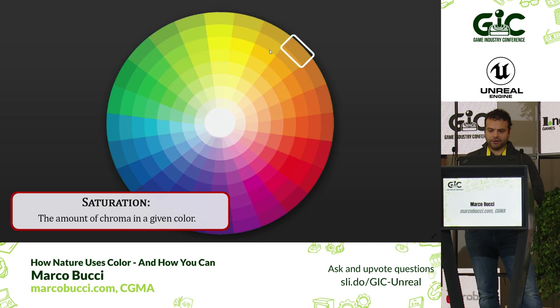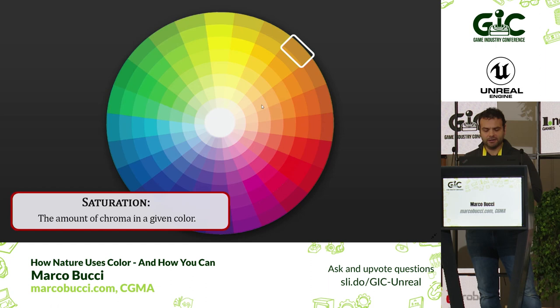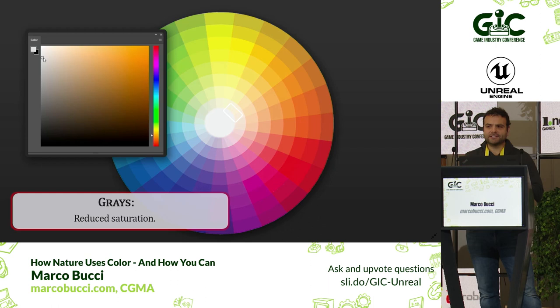The outside of the color wheel is pure saturation. The amount of chroma in a given color is saturation — so the most chroma is the most saturated. On the other end of the spectrum we have gray, or less saturated. I use Photoshop, and we have the Photoshop color picker up here.